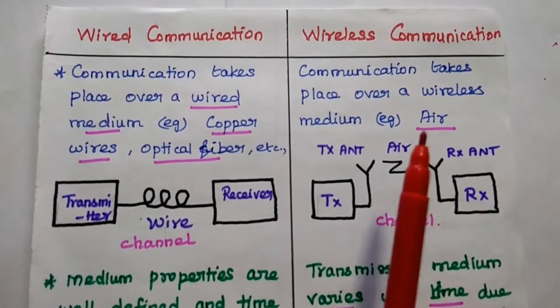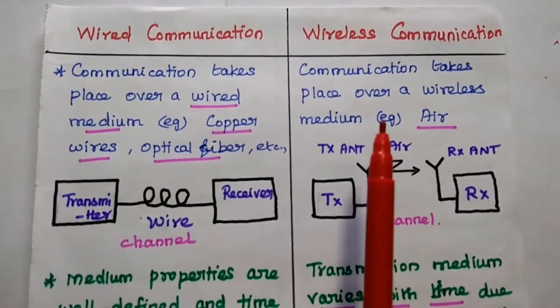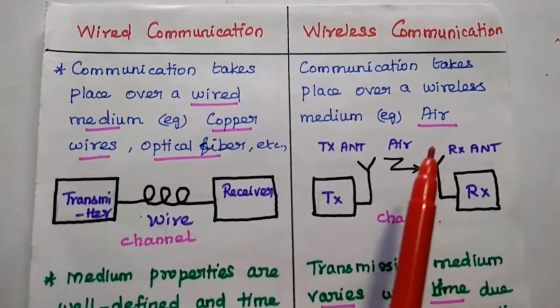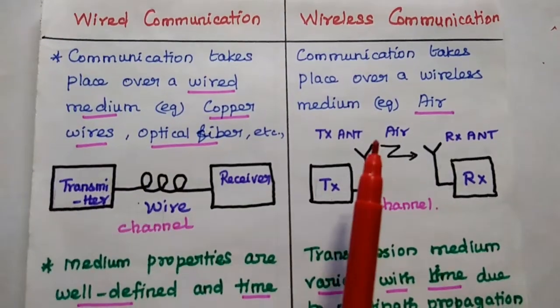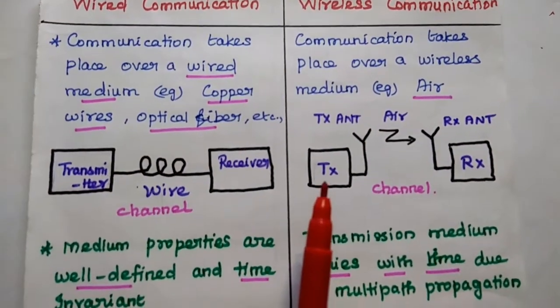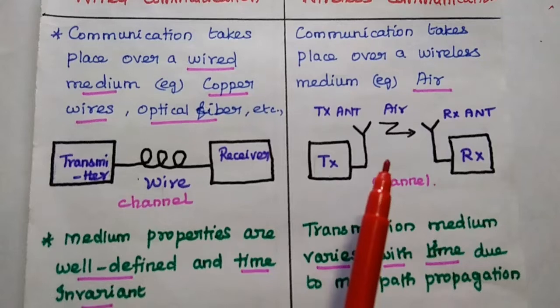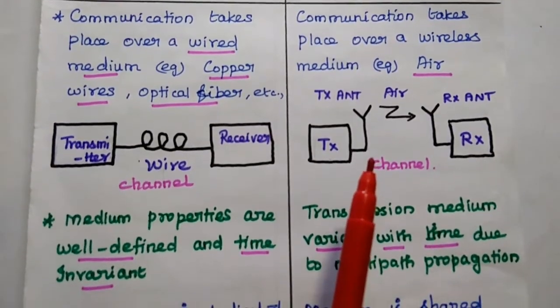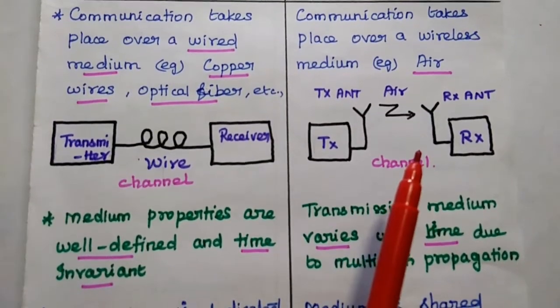But in wireless communication, the communication takes place over a wireless medium, for example, air medium. Here antenna plays a vital role in wireless communication to radiate the signal over an air medium.